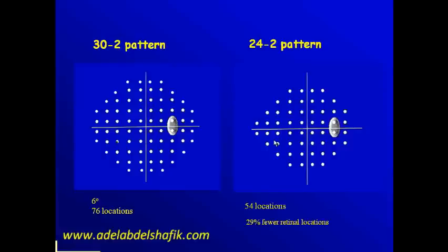Reducing the number of test points from 76 down to 45, this means a shorter test time. The problem with the static field, it takes a long time so the patient starts to lose concentration. So we're trying to get information in a quicker way. One of the things, we stop doing the 30 degrees and we shift to doing the 24. The 24 will get almost the same information and we get it in a shorter time.